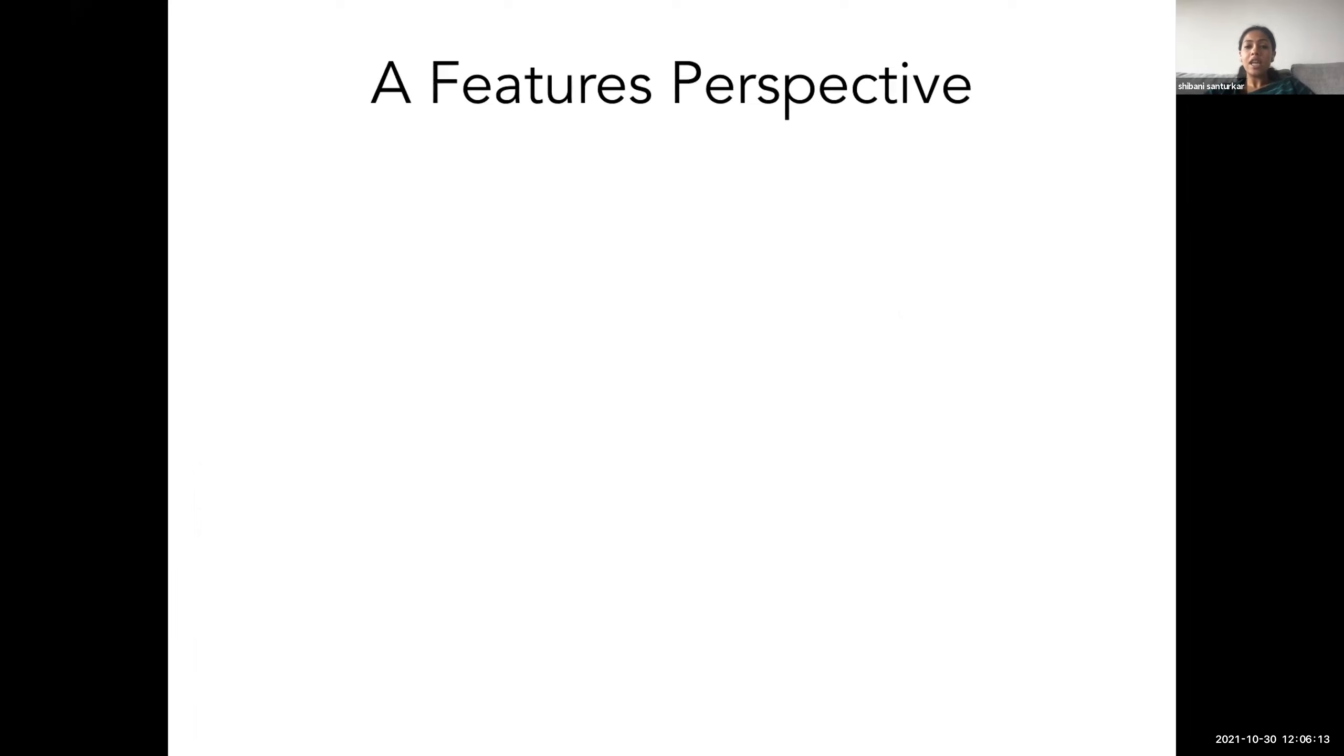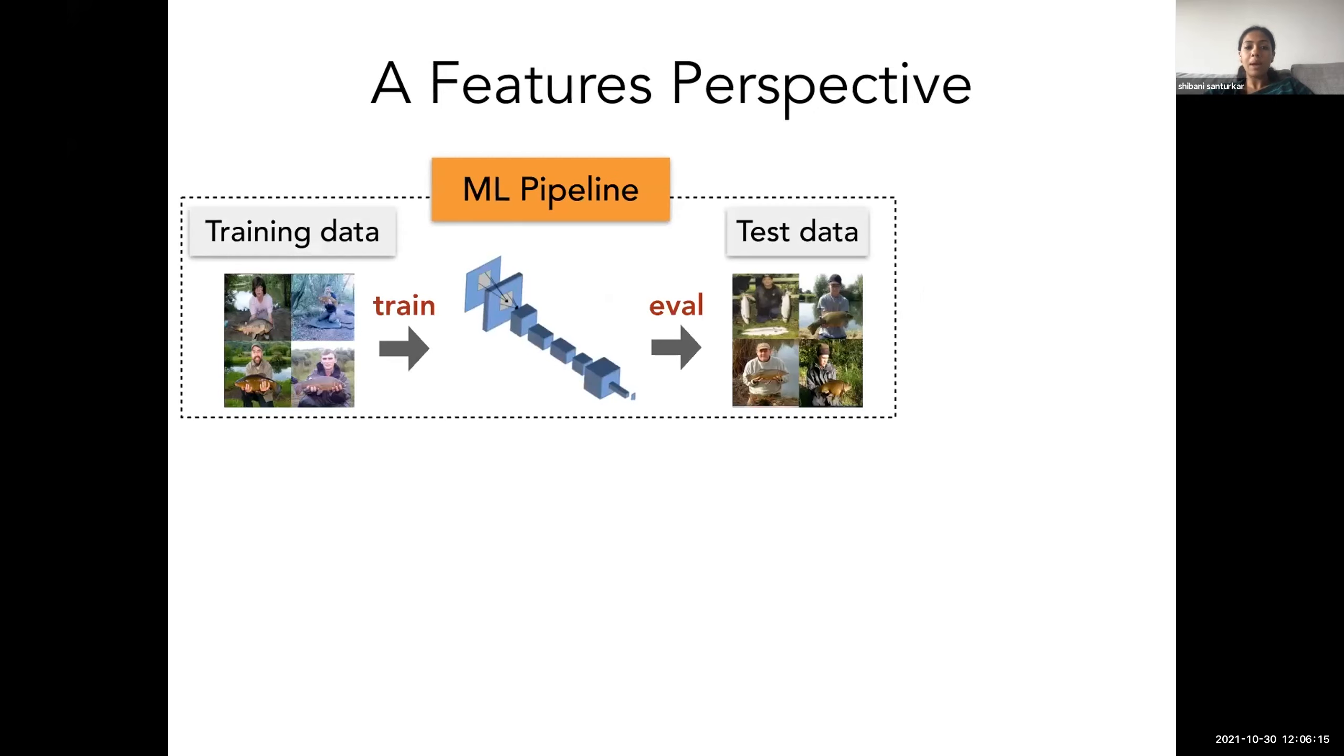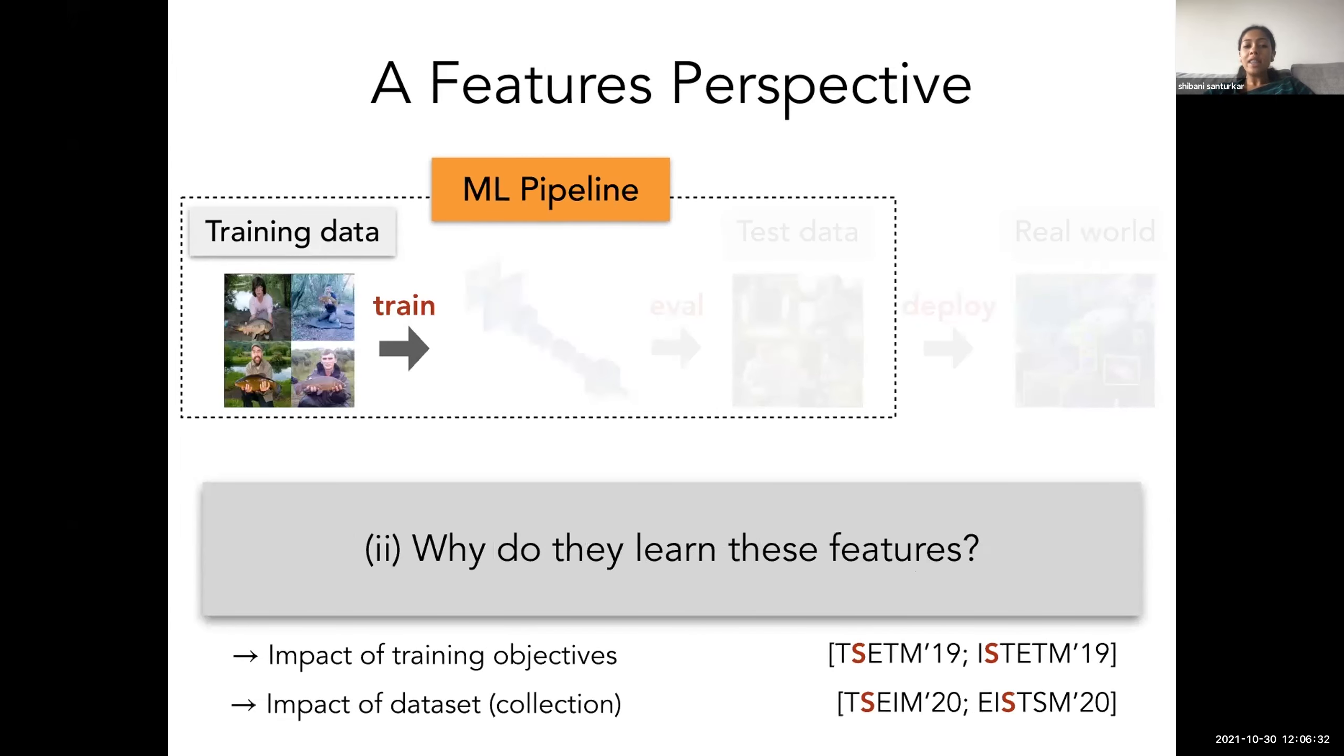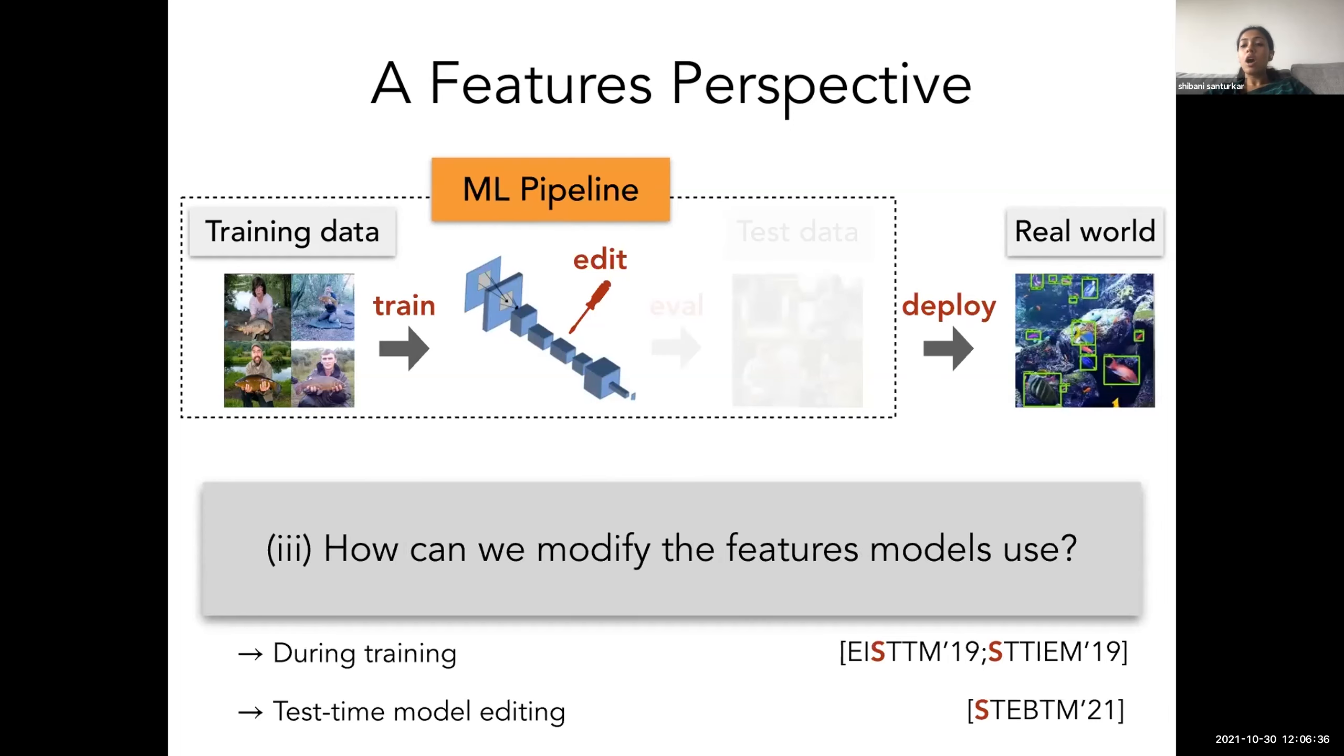And in order to do this, my research is focused on taking a feature perspective of the ML pipeline, in particular focusing on every component of the ML pipeline and asking what features do these induce models to learn and how does this align with the real world task that we actually care about. In particular, focusing on what features current models depend on, why they learn these features, and how we can modify these features learned by models. And I'm going to stop here, but I look forward to chatting with all of you at the poster session. Thank you.